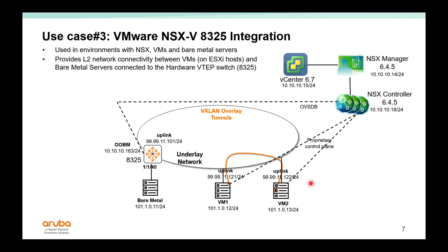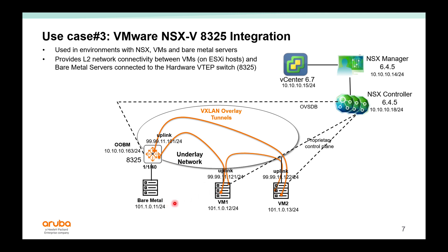With 10.4, we also support VMware NSX-V and H325 integration. This is a very niche use case. In a typical NSX-V environment, you have your hypervisors and you build VXLAN tunnels between them so that the VMs can communicate through the IP fabric. With this integration, H325s can communicate with the NSX controller through the OBS-DV protocol to dynamically bring up tunnels between the hardware VTAP and the software hypervisor VTAPs, so that the bare metal server can communicate with the virtual machine on the same subnet. Remember, it only provides layer 2 network connectivity.